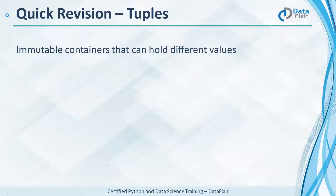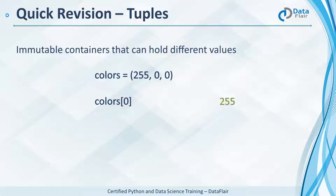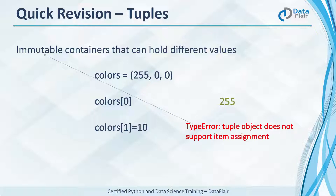Tuples are immutable containers that can hold different kinds of values. This is a tuple with three values. We call this colors. This holds the RGB values per color. The first value in the tuple is 255. We can index tuples and indexing begins at zero. But we cannot reassign the second element, or the element at index 1. This is a type error as tuples are immutable and we cannot reassign them.